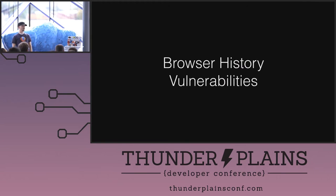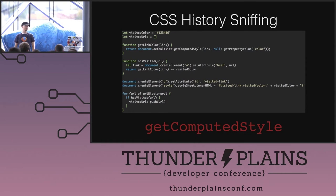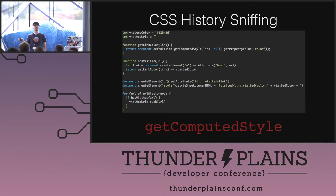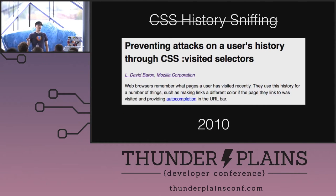First, browser history. There are browser history vulnerabilities. CSS history sniffing — the way this works is you can draw a bunch of link elements on a page, and you can use the getComputedStyle API to ask the browser what color they are. If they match the visited color, then you know that person has been there. That was snuffed out in 2010 — they got rid of getComputedStyle for visited links.